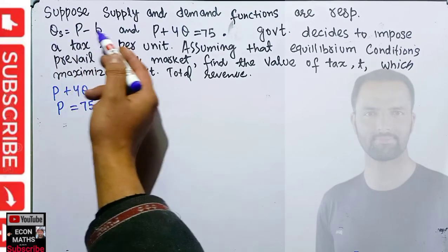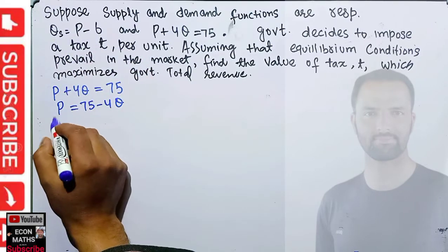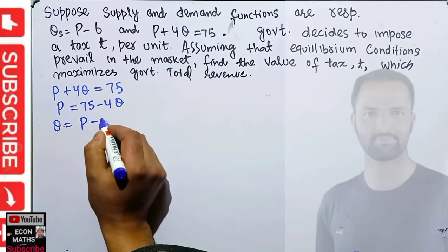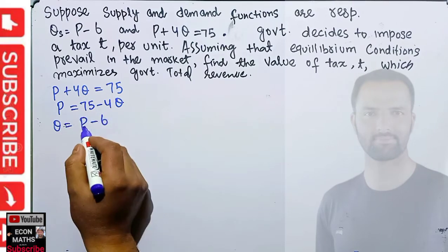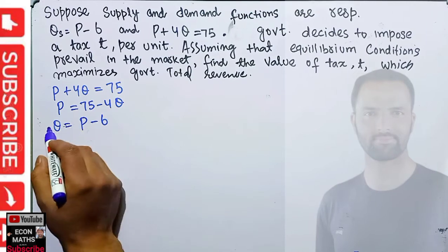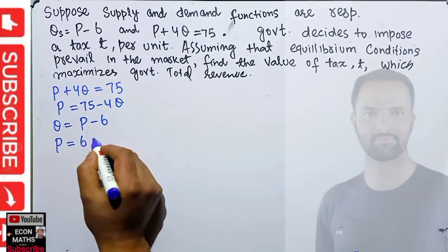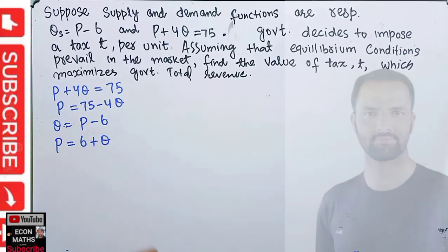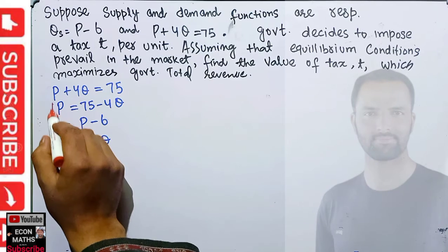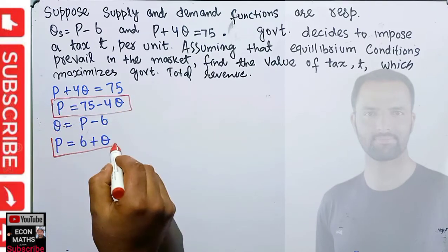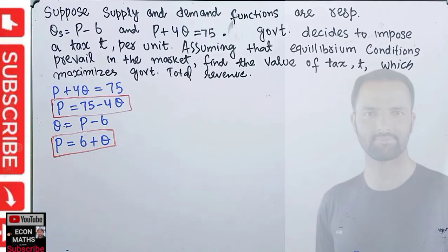This is our demand function. The supply function given is Q = P - 6. Solving for P, transposing the 6, our supply function becomes P = 6 + Q. So this is our demand function and this is our supply function.